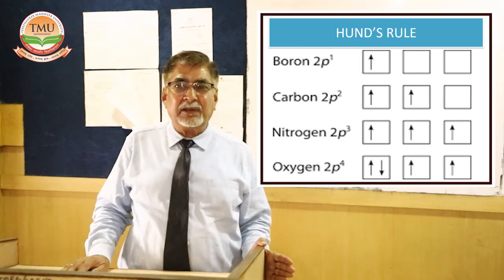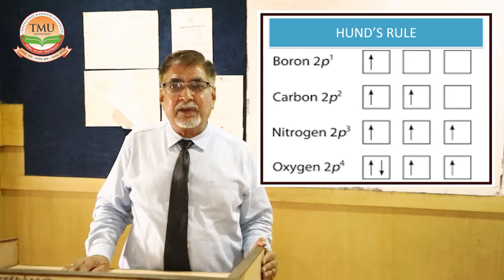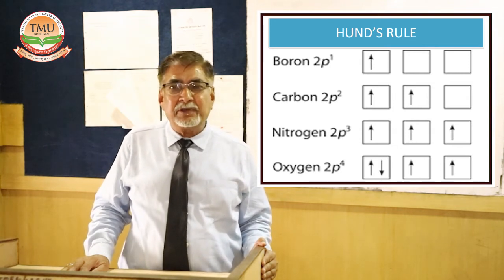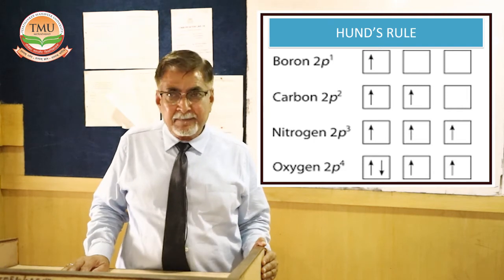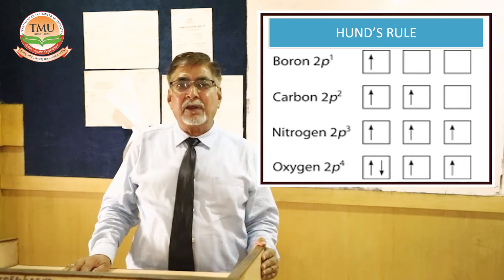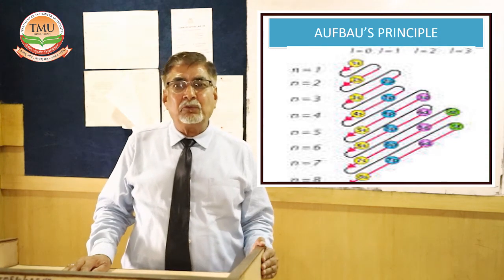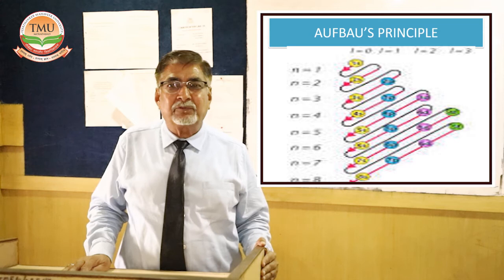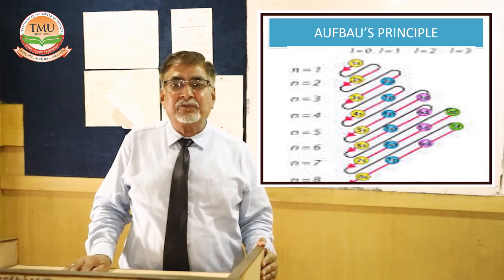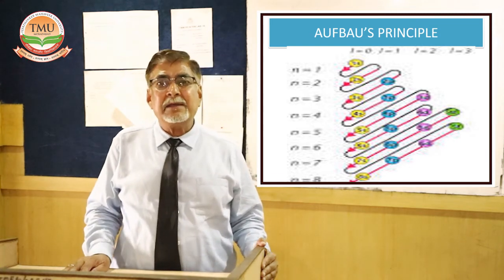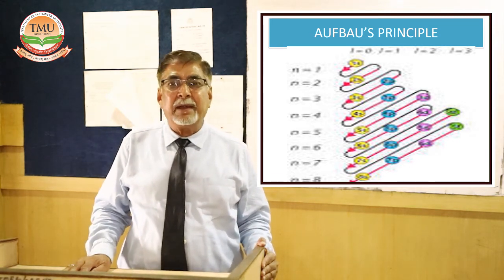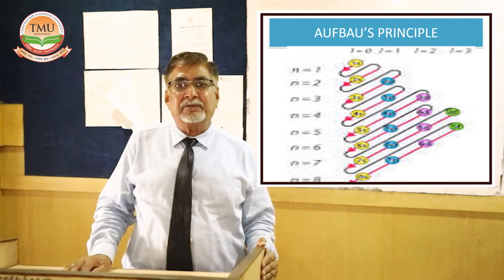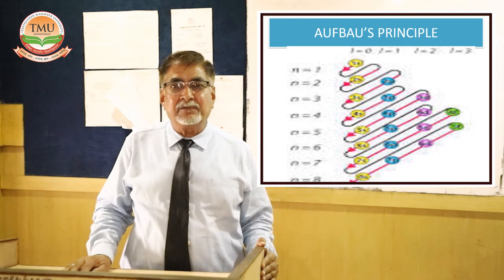Turning to transition elements, there are three series: the first runs from scandium to zinc, the second from yttrium to cadmium, and the third from lanthanum to mercury. We should distinguish D-block elements from transition elements. D-block elements are those in which the D orbitals are fully filled with 10 electrons — for example zinc, cadmium, and mercury — and these are not considered true transition elements.